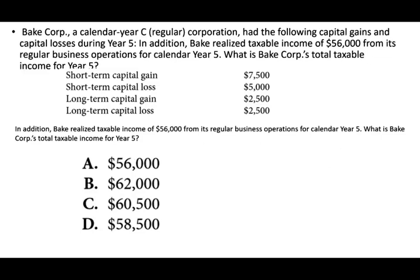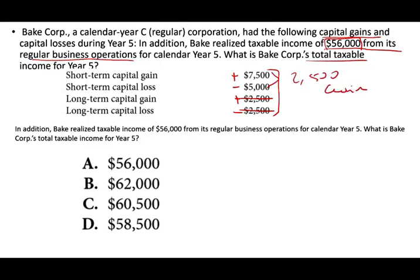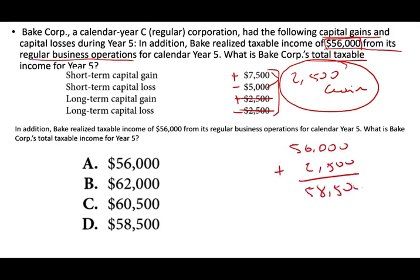BAKE Corporation, a calendar-year C-Corp, had the following capital gains and losses during year five. In addition, BAKE realized taxable income of $56,000 from regular business operations. What is the total taxable income? Net out the short-term gains, long-term gains, and short-term losses — gain and loss cancel each other, leaving a $2,500 net gain. For a corporation it does not matter whether it is short-term or long-term; the gain is treated like ordinary income. So $56,000 plus $2,500 equals taxable income of $58,500.